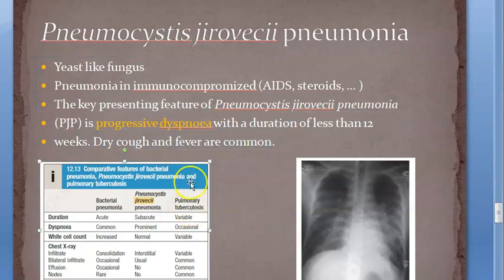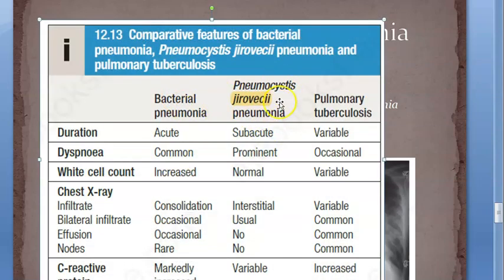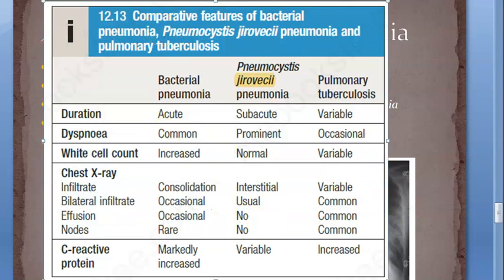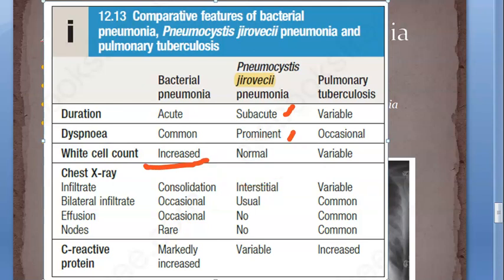Looking at the comparison table: how is Pneumocystis jirovecii different from bacterial pneumonia or pulmonary tuberculosis? Pneumocystis pneumonia is subacute - that is why they say 12 weeks. It's not sudden, not chronic, somewhere in between. Dyspnea is prominent, white cell count is normal - unlike bacterial infection where it is elevated. On chest X-ray you will see bilateral infiltrates.